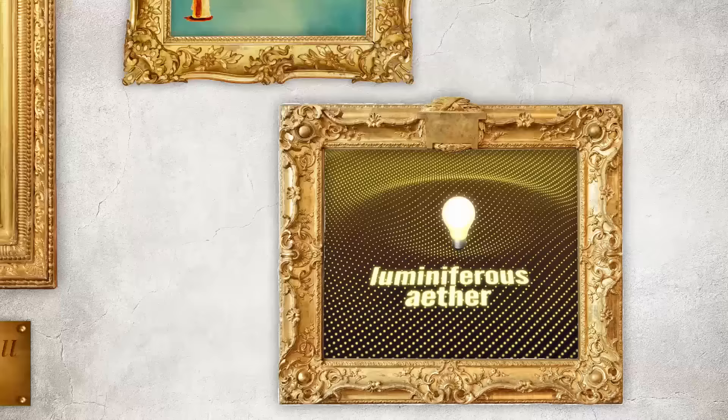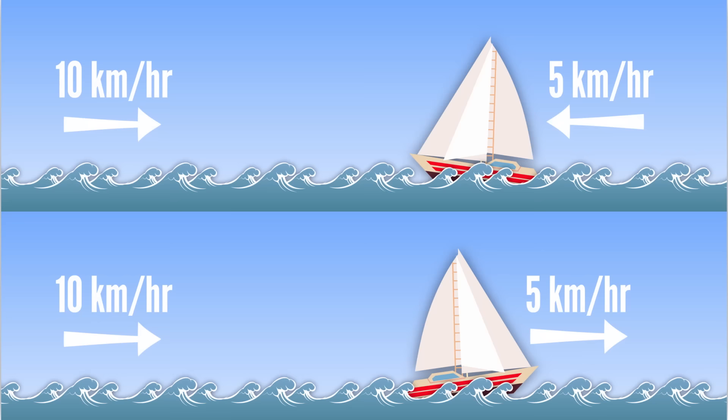They called it the luminiferous ether, and once again, space was a thing. But there was a problem with this idea. Two boats will measure an ocean wave's speed differently depending on their own velocities through the water. But light waves, unlike anything else in the universe, always have the same speed, no matter who's measuring.